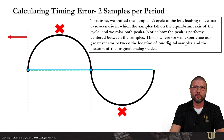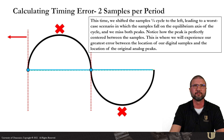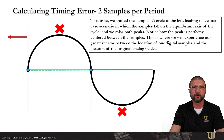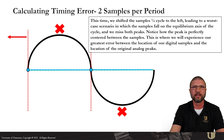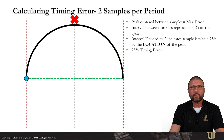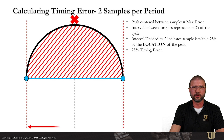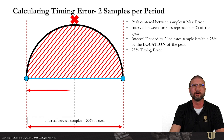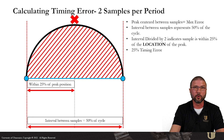In this case, we shifted the samples a quarter cycle to the left, which gave us a worst case scenario in which those samples fell on the equilibrium axis of the cycle, and we miss both peaks, resulting in no signal detection. Notice how that analog peak is directly centered between those two samples — this is where we experience our greatest error between the location of our digital samples and the location of the analog peaks. When a peak is centered between samples, we lose the timing and amplitude accuracy. Everything above that blue line would be lost — this is our worst case scenario.